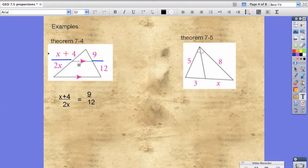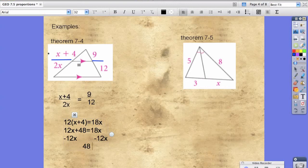And then we take the cross product, so 12 times the quantity x plus 4 equals 18x. We get 12x plus 48 equals 18x. Subtract 12x to both sides. We get 48 is equal to 6x. And x is equal to 8.